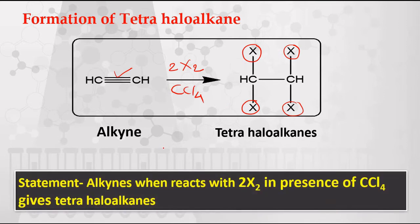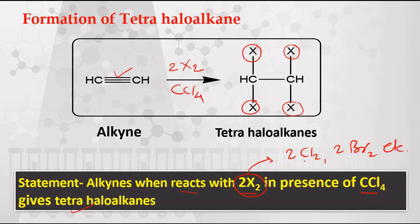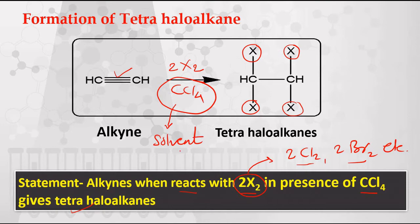The statement of this reaction is: alkynes, when they react with 2X₂ in the presence of CCl₄, give tetrahaloalkane. This means with 2Cl₂ or 2Br₂, you can add these chlorine atoms, bromine atoms, or different halogen atoms across this carbon-carbon triple bond. CCl₄ is used as a solvent in this reaction.